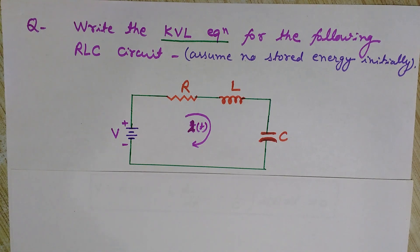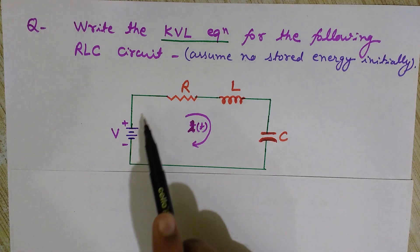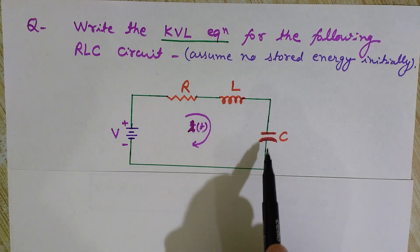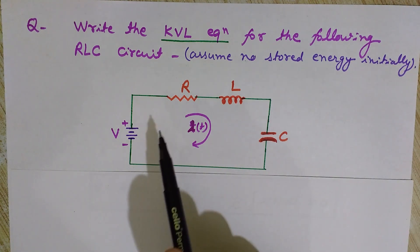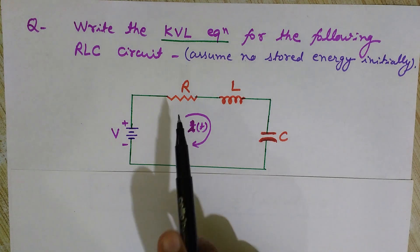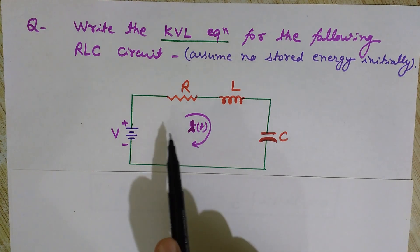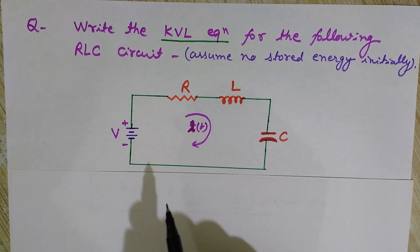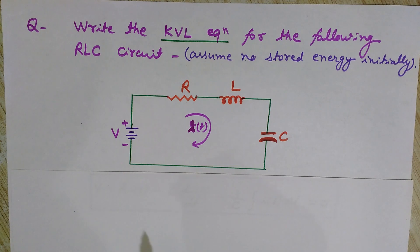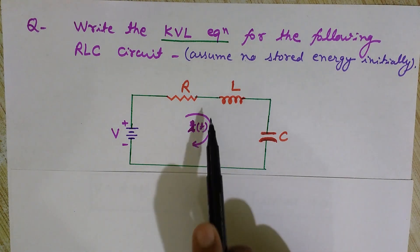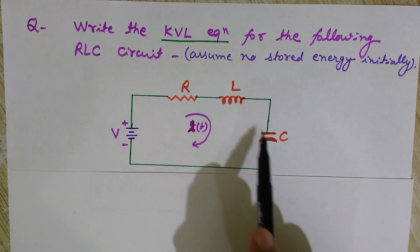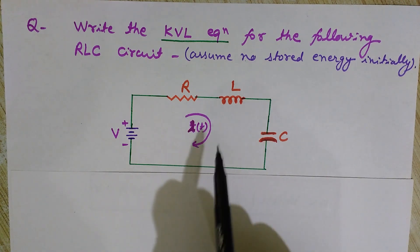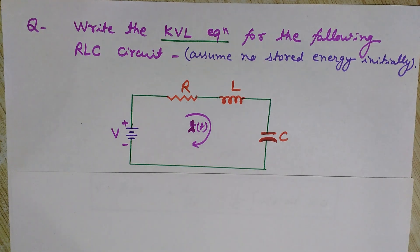So first let me tell you what is Kirchhoff's voltage law, that is KVL. According to Kirchhoff's voltage law, the net potential drop in a closed electrical circuit is zero. It means the summation of voltages across each component is zero, whether we move in the clockwise direction or the anti-clockwise direction at any instant of time. The summation of all voltages across all the components in the circuit will be zero at every instant of time.